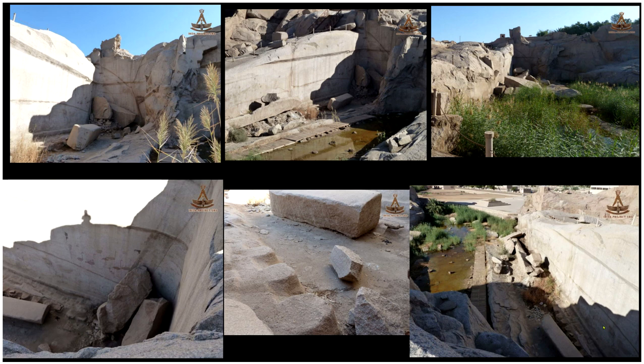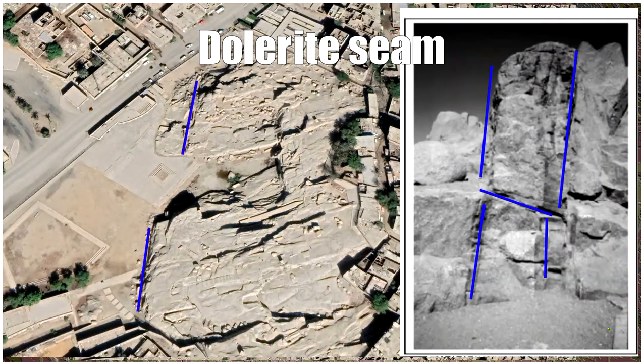In part one I was looking at the dolerite seam. You'll often hear 'lol copper chisels, lol dolerite pounders' — and where did the stone come from? Well, the stone is sourced there, but this dike or seam of dolerite, as I showed in part one, follows the workings of the quarry. You would take advantage of the cracks that are in there.